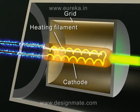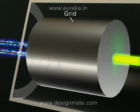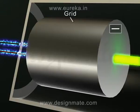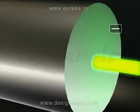Grid: It is a nickel cylinder which encloses the heating filament and the cathode completely. It is maintained at a negative potential with respect to the cathode. As a result, the electron beam converges because of repulsion between electrons and the negative potential of the grid.